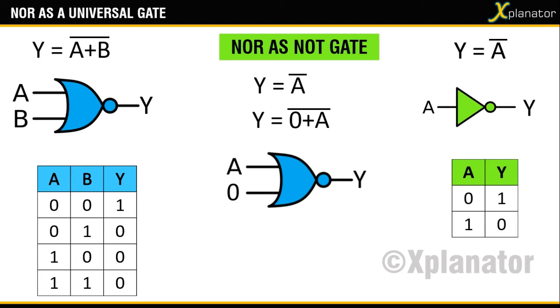To test this on the truth table, set one of the inputs to be LOW. Let us say A is LOW. Then, for any value of B, you will get a value of Y as opposite value of B.